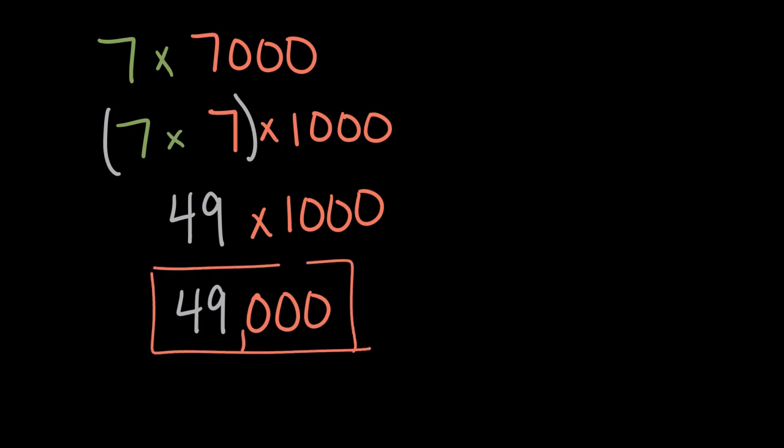Just like up here, seven times 1,000 was a seven with three zeros. 49 times 1,000 is a 49 with three zeros, or 49,000. Let's look at this as a pattern.